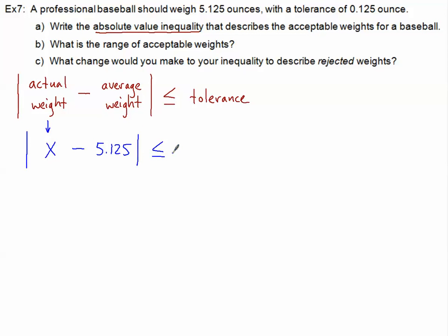And then less than or equal to, and of course, our tolerance is given to us in the problem. That is 0.125. So this is our absolute value inequality, and that's how you do it for any type of problem like this.